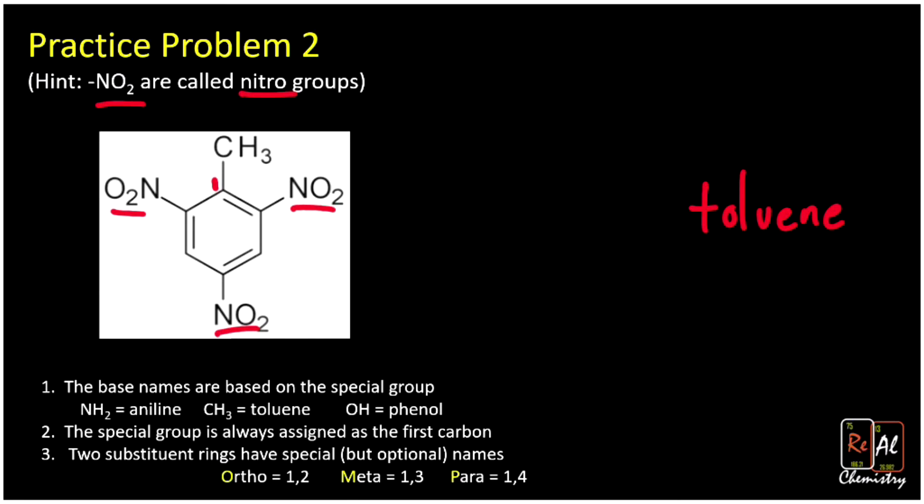We remember that our special group, the CH3, gets our one, and it actually doesn't matter which direction we number it. In this case we'll get the same thing - we're going to get that we have nitro groups at 2, 4, and 6. If we numbered it the other direction, same thing - we get 2, 4, and 6. When we name this, we have nitro groups, three of them, at 2, 4, and 6, so this is going to become 2,4,6-trinitro toluene. Oh snap! You know what's really fun about this compound and the reason I chose to name it? 2,4,6-trinitro toluene has TNT - that's right, this compound right here is what we call TNT.